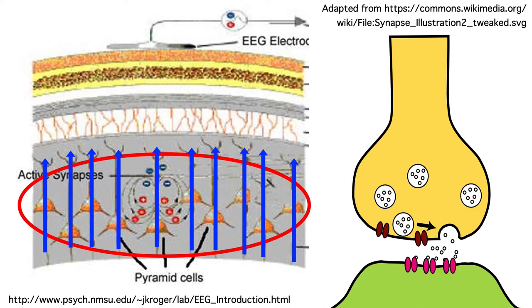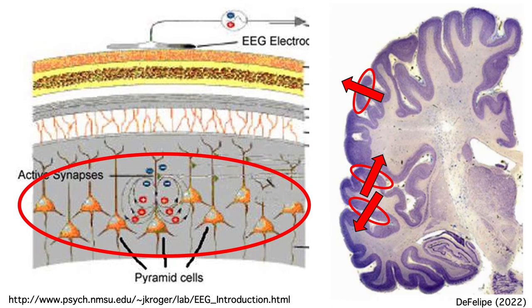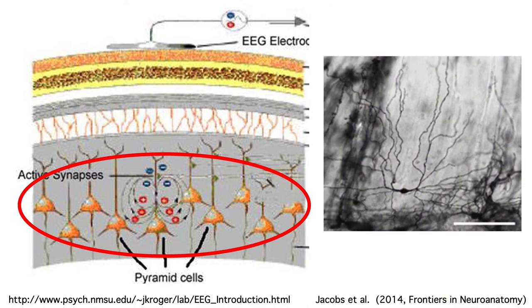But this doesn't mean that they're perpendicular to the scalp. The cortex is all folded up, so the pyramidal cells in different patches of cortex point in very different directions relative to the scalp. Interneurons don't have this kind of consistent geometry with respect to the cortical surface, so they don't contribute directly to ERPs.